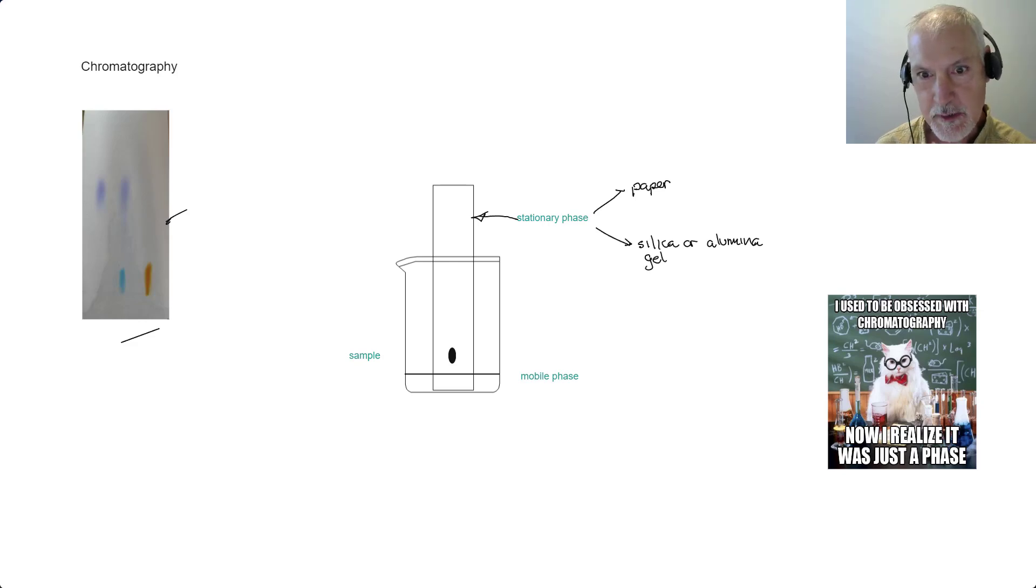Now let's explore this a little bit further by looking at some of the intermolecular forces that are present. The paper is about 10% water. That water is attached to the hydroxide molecules that are present in the cellulose molecule, of which paper is made.